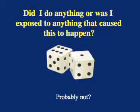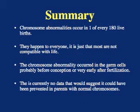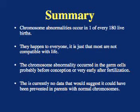One might think that the survivors of the Hiroshima nuclear bomb and their descendants might have had more children with chromosome abnormalities due to increased radiation exposure, but they have not. So, this leads us to the conclusion that for parents who themselves have normal chromosomes, there was no way to prevent having a child with a chromosome abnormality other than to not have children. To summarize: chromosome abnormalities occur in 1 out of every 180 live births; they happen to everyone, it's just that most are not compatible with life; the abnormality occurred in the germ cells probably before conception or very early after fertilization; and there are currently no data to suggest it could have been prevented in parents with normal chromosomes.